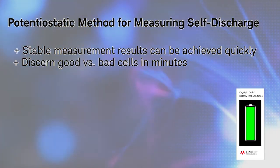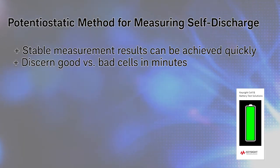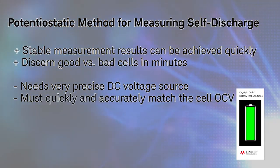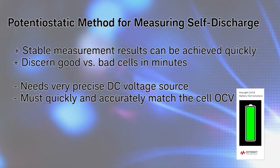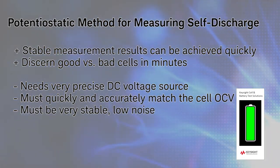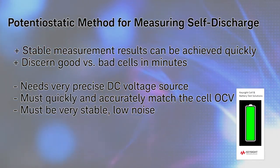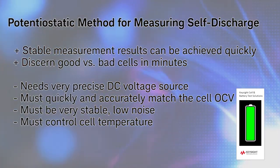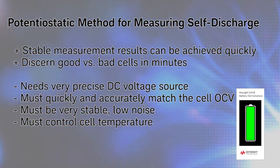The potentiostatic method requires precision equipment. The DC source must be very accurate, quickly match the cell's open circuit voltage, be very stable and have very low noise. You must also control the cell's temperature to prevent cell voltage variation caused by temperature changes.